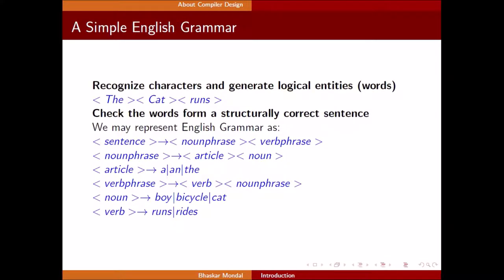Now, a simple English grammar is given here. Recognize the characters and generate logical entities words. Check the words form a structurally correct sentence. We may represent English grammar as sentence, which is divided into two parts: noun phrase and verb phrase. The noun phrase can have two parts: article and noun. Articles may be A and The, and noun may be anything which represents some name. And verb phrase may have verb and noun phrase. This noun phrase may be anything like boy, bicycle, cat. And verb may be runs, rides, flies, anything.